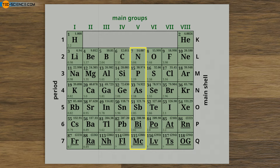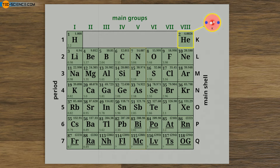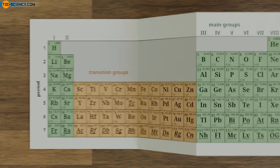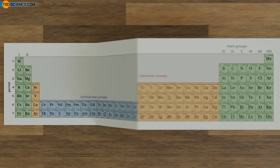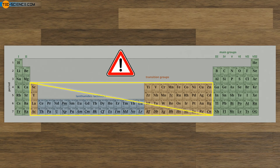An exception is the element helium, which belongs to the 8th group of noble gases but has only 2 electrons. Note that determining valence electrons by group number, with the exception of helium, applies only to the main group elements, not to the transition group elements, which will be discussed in more detail later.